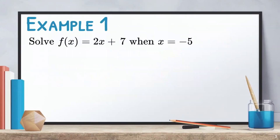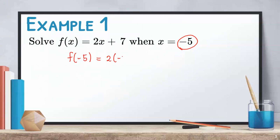Let us take a look at this example. Solve for f of x equals 2x plus 7 when x is equal to negative 5. To evaluate this function, we just need to substitute negative 5 to the given function. This will give you f of negative 5 equals 2 times negative 5 plus 7.